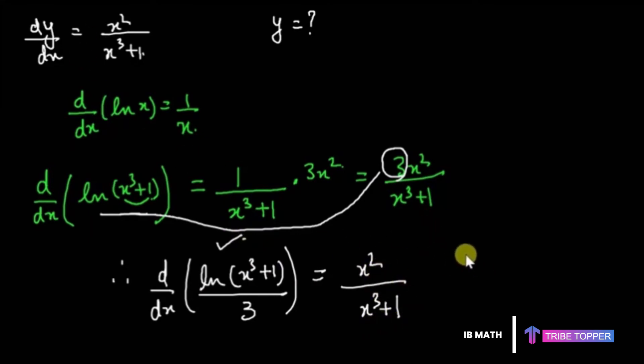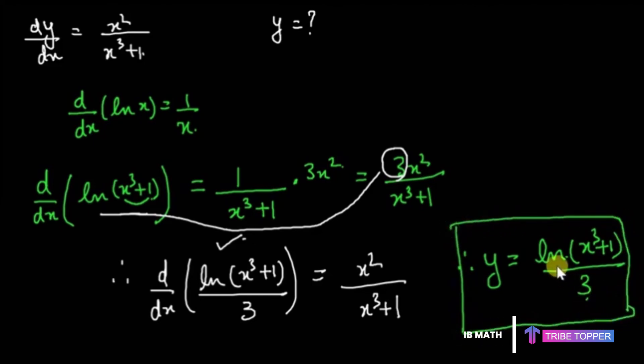Therefore y, because d/dx of y is giving us x squared over x cubed plus 1, and d/dx of ln of this is giving that, so y is ln of x cubed plus 1 upon 3. We have found out y because differentiating ln of x cubed plus 1 over 3 is going to give us this. This is how you can find y by anti-differentiation.